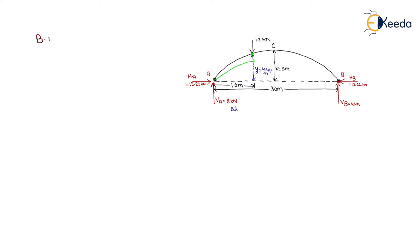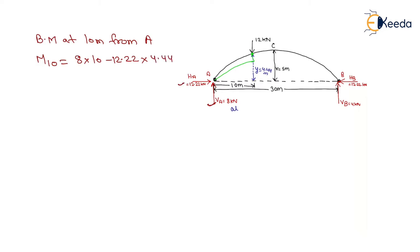The bending moment at 10 meters from A equals 8 into 10 (due to the vertical reaction) minus 12.22 into 4.44 (due to the horizontal reaction). Its value equals 80 minus 54.26 equals 25.69 kilonewton meters. That is the bending moment under the load.